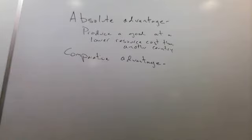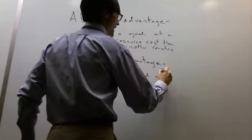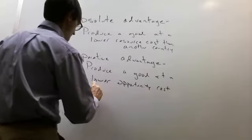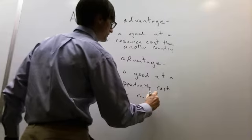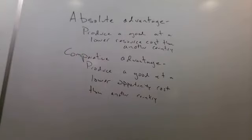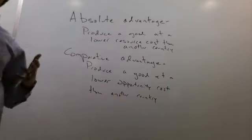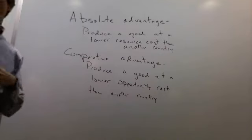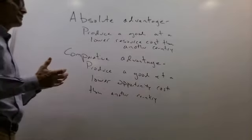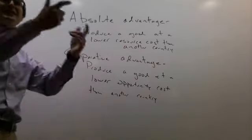Comparative advantage means you can produce a good at a lower opportunity cost than another country. We don't normally think about production in terms of opportunity cost — what we give up compared to another country. But this is actually more important. When we spend a lot of resources producing things we're relatively bad at, we give up production of things we're relatively better at. So even if resource costs differ, the more important question is: what is the opportunity cost?